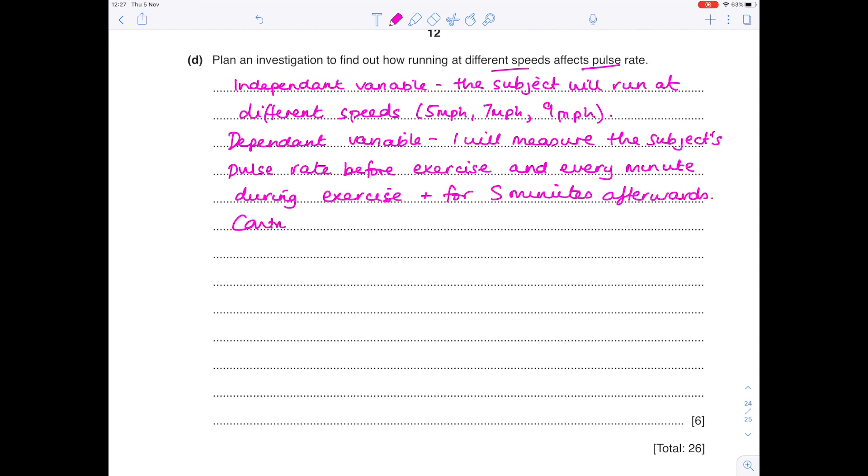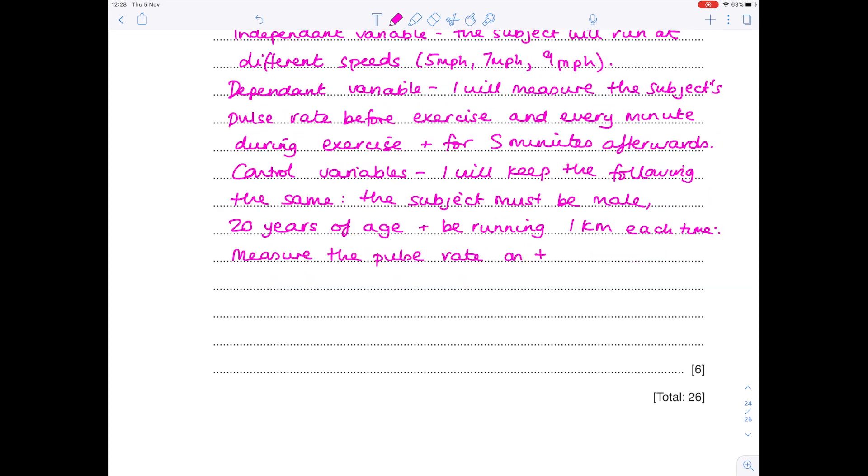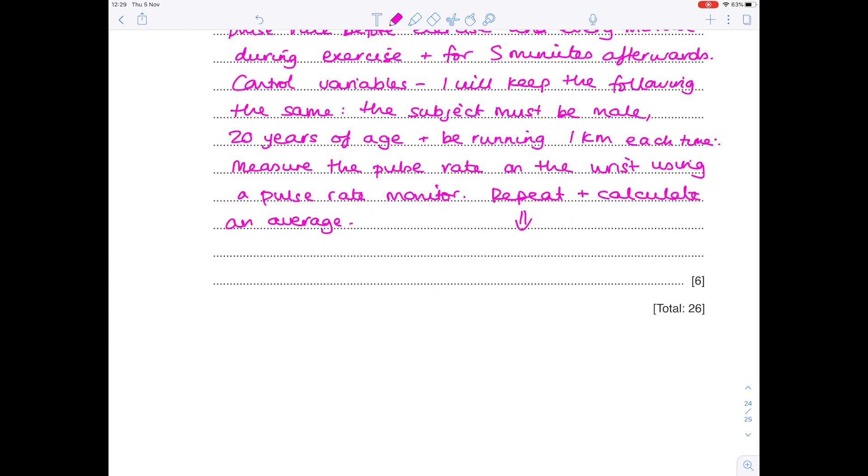What are our control variables? So what do we need to keep the same? I will keep the following the same. So pick anything sensible here. So in terms of the subject, the subject, pick a gender. Must be male. It's important that they're basically the same age. So let's say 20 years of age. And I know we're looking at different speeds, but it's important that they're running the same distance each time. So one kilometer each time. Let's add a few extra details. Measure the pulse rate on the wrist using a pulse rate monitor. And don't forget to state that you need to repeat and calculate an average. You must always say that. It's probably good to say how many times you're going to repeat it. So at least three times.